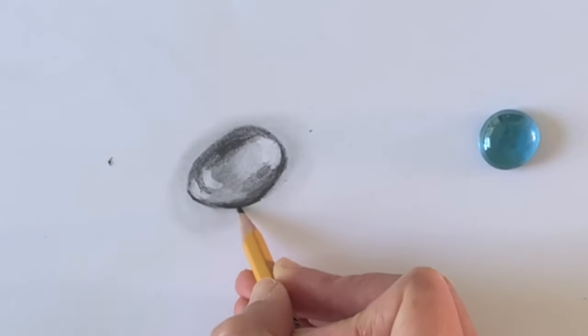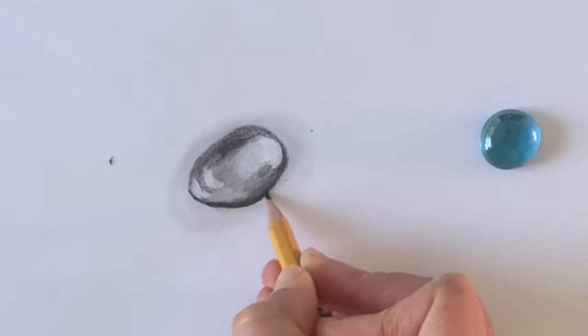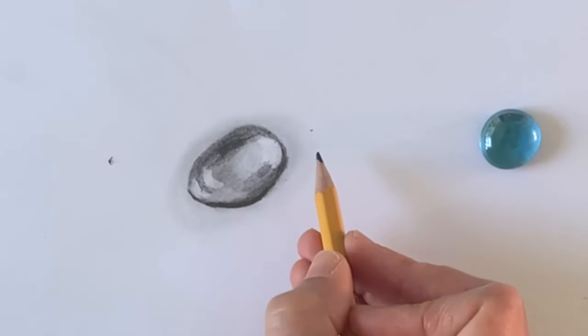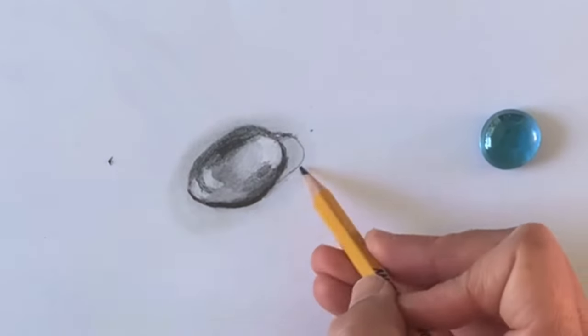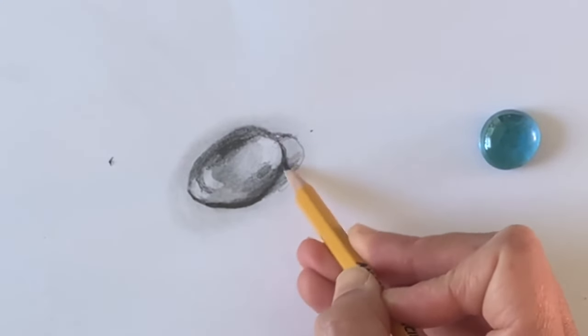Although my shape is different, I did kind of use where the highlights and shadows were as a guide. I am adding a cast shadow, and my blending stick is going to be really important in making this flow and not look like it's just stuck on there.